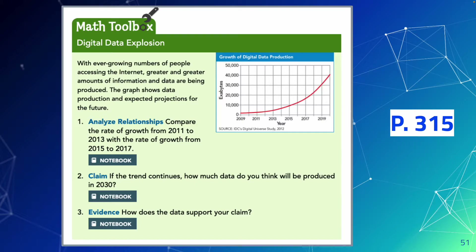On page 315, the math toolbox shows a graph of data production and expected projections. The x-axis shows years from 2009 to 2020, and the y-axis shows exabytes of digital data. Compare the rate of growth from 2011 to 2013 with the growth rate from 2015 to 2017.